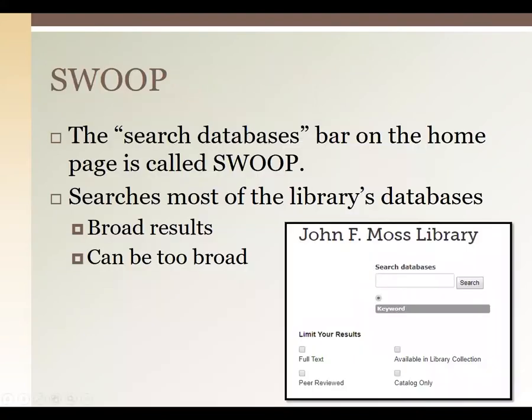Swoop is our Google-style search within the library's website. It searches most of our databases — not all, but most — and it's going to get you a lot of results, which can be good and bad. If you enter a simple keyword like 'agriculture,' you'll get back over 9 million results. That's complete information overload — way too much to search through. To make searches more effective, we have to narrow down our topic and other factors.